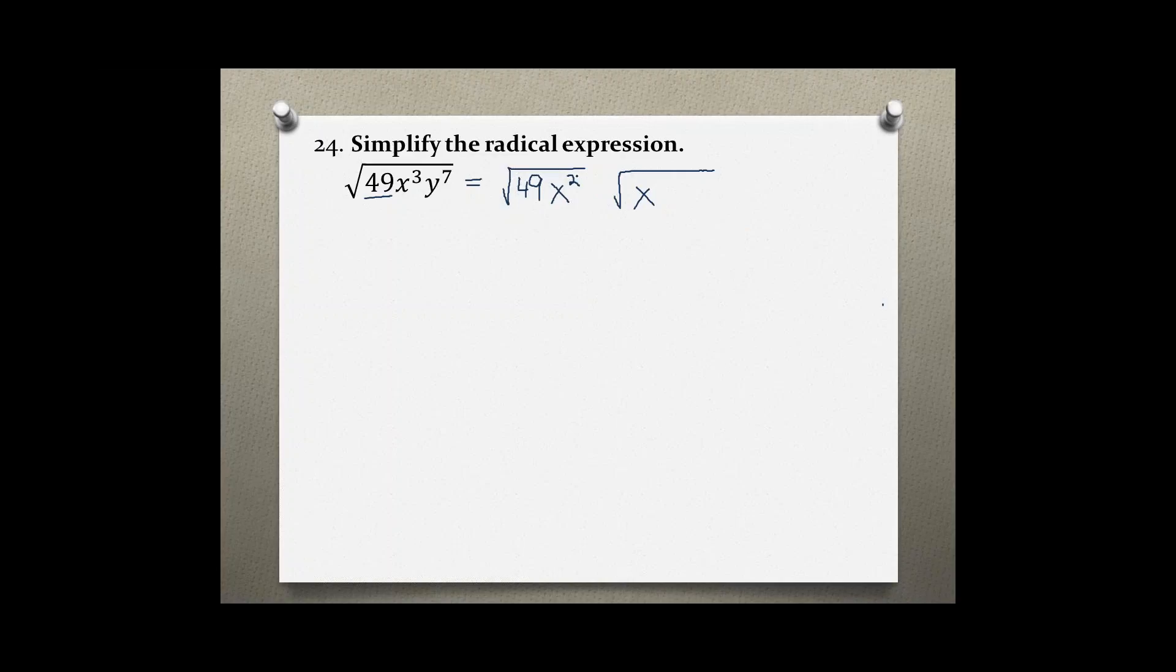...you need to make the exponent of the variable divisible by the index. In this case the index is 2 so it needs to be an exponent that is divisible by 2 and the closest one if I have 3x would be 2.